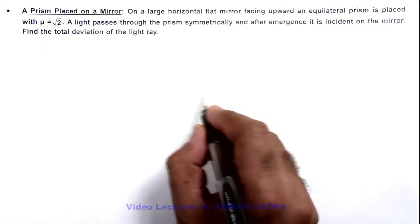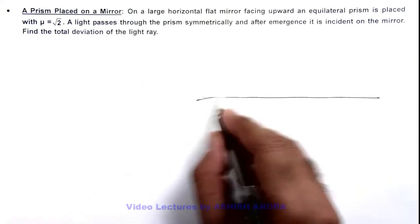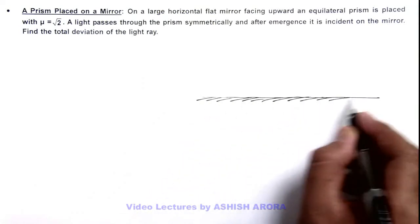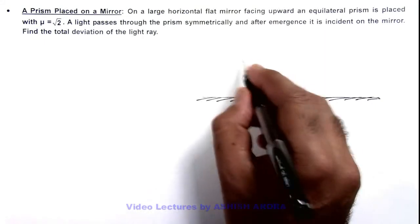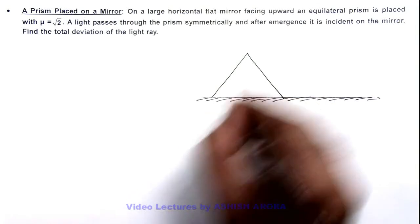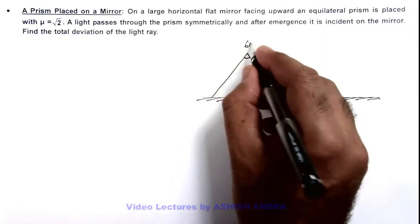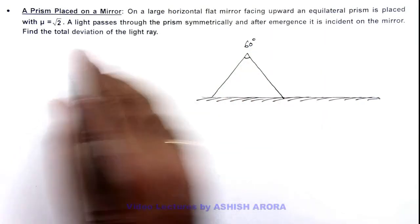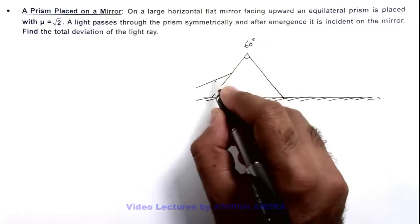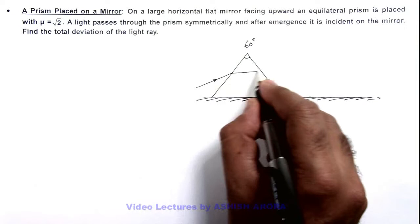In this situation if we consider this as the plane mirror, on which an equilateral prism is placed where the prism angle is 60 degrees. We are given that a light passes through the prism symmetrically, that means this is under the situation of minimum deviation.